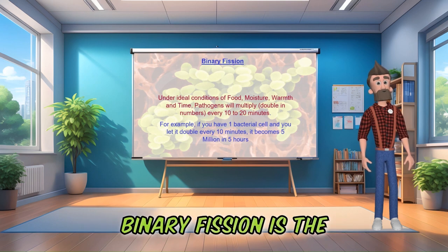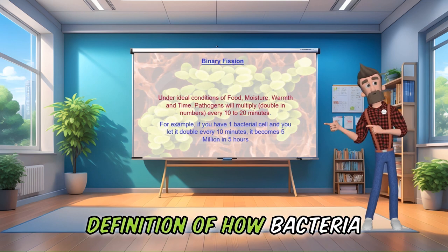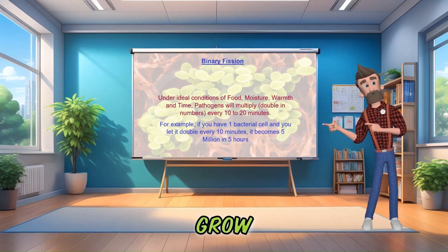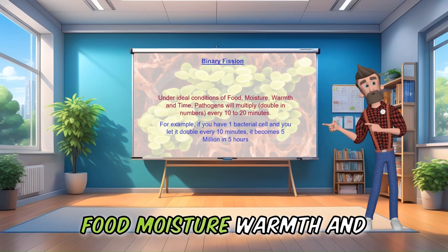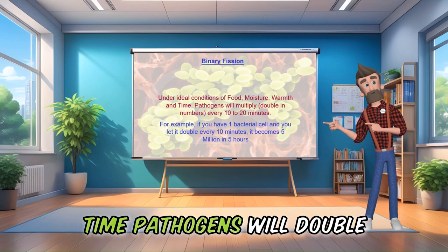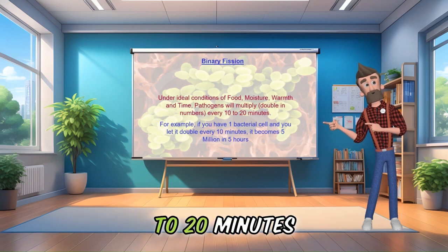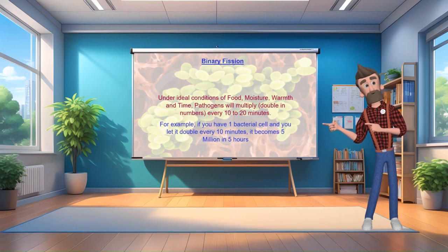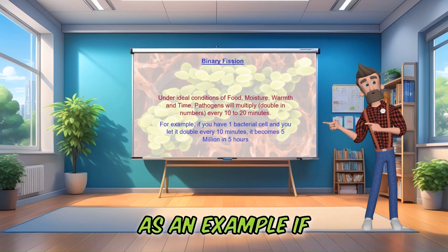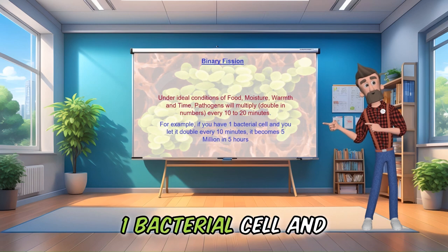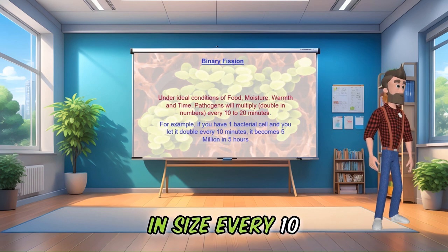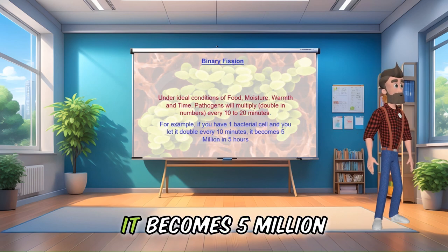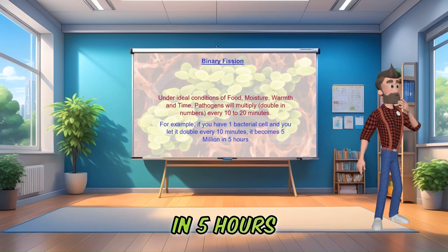Binary fission is the definition of how bacteria grow. Under ideal conditions of food, moisture, warmth, and time, pathogens will double in number every 10 to 20 minutes. As an example, if you start off with one bacterial cell and you let it double in size, every 10 minutes it becomes 5 million in 5 hours.